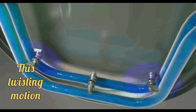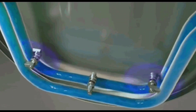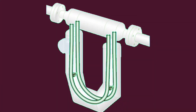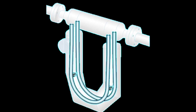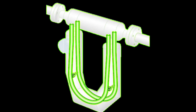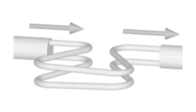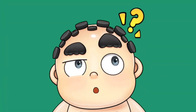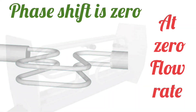This twisting motion is measured by the sensors. Due to the twisting motion, the tubes start to vibrate. The more the flow passes, the more will be the phase shift. Similarly, when there is less flow, the phase shift is reduced. At zero flow rate, the phase shift remains zero.